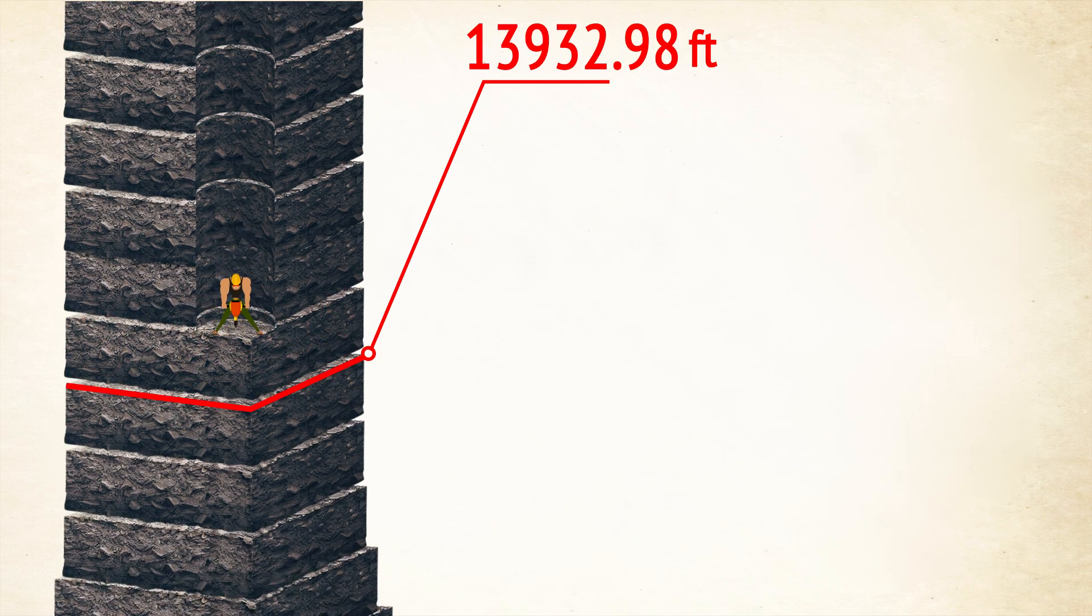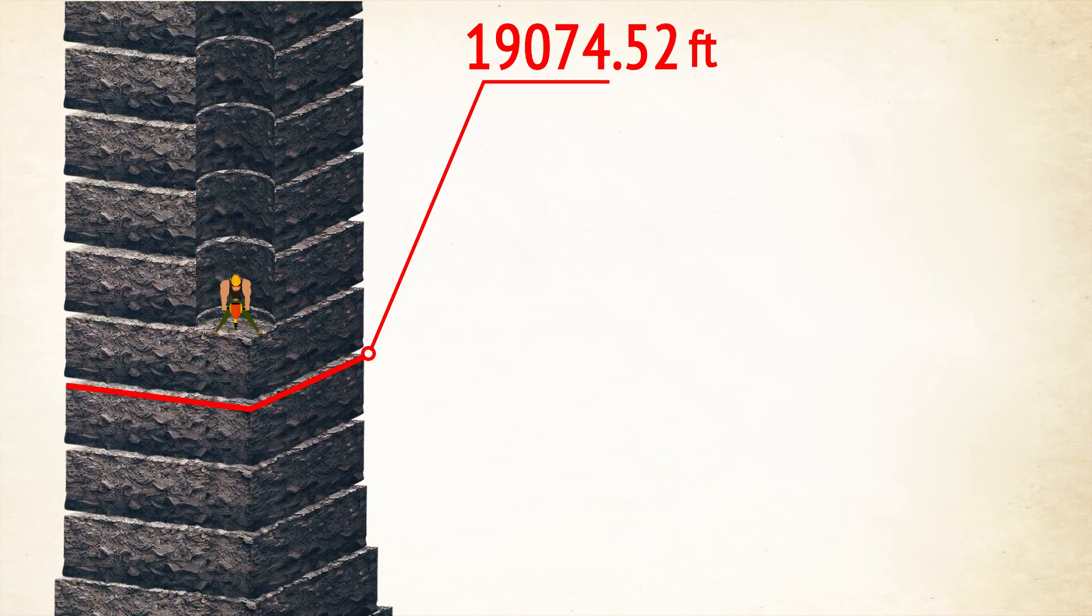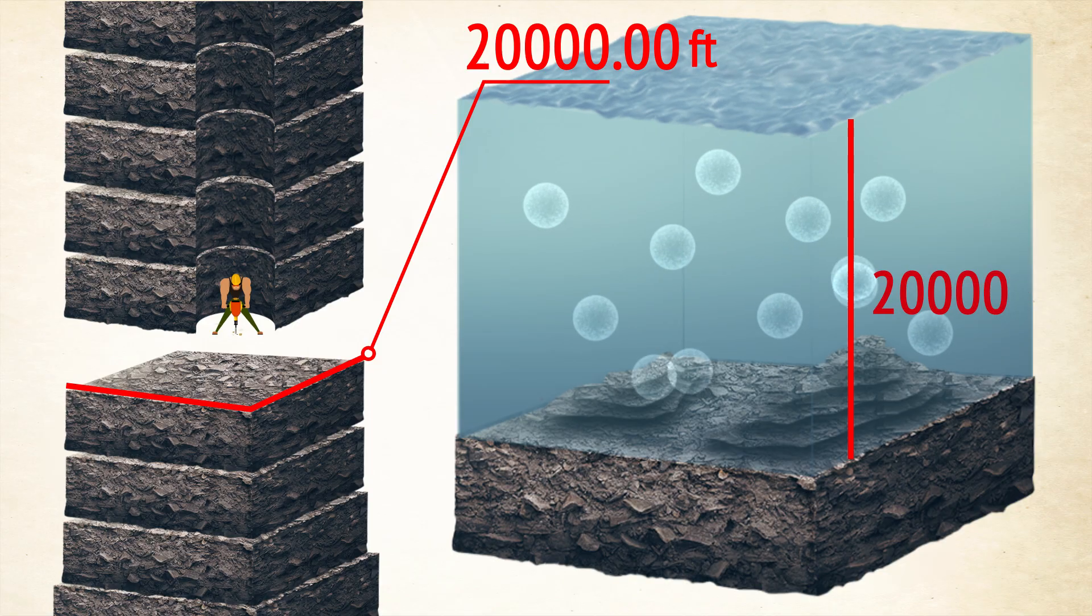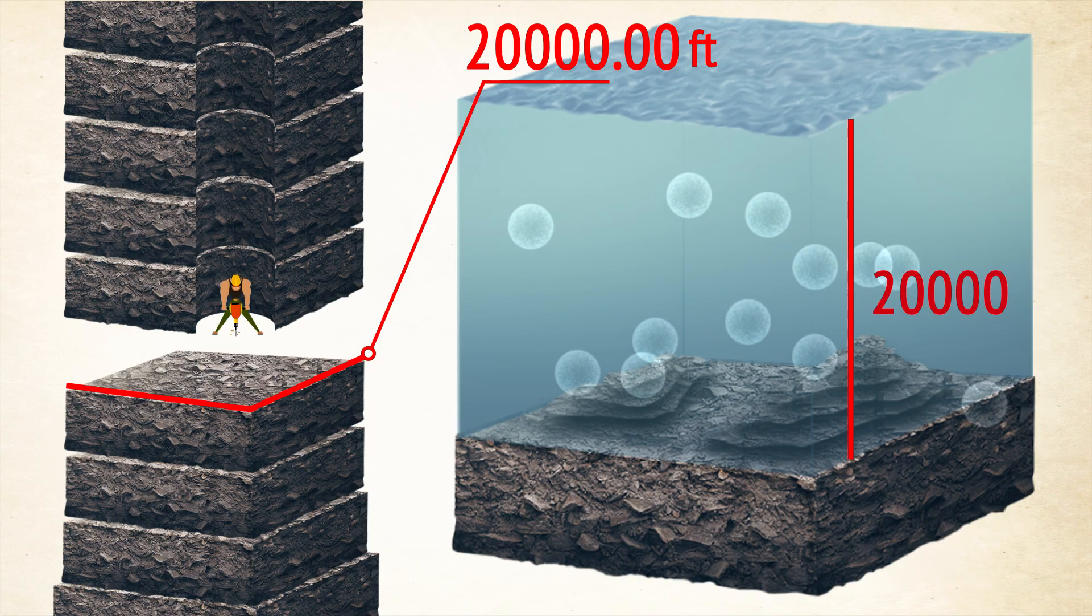The average depth of the oceanic crust is almost 20,000 feet. This is also the depth of the deepest known microbes. They were found in rocks below China's Songliao Basin.